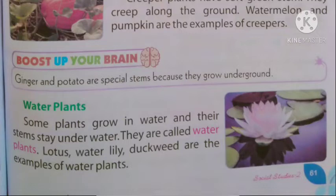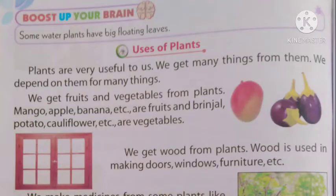कुछ ऐसे भी plants होते हैं जो पानी में रहते हैं। Water plants - some plants grow in water and their stems stay under water, they are called water plants. कुछ plants जो होते हैं वो पानी में उगते हैं और उनके तने पानी में रहते हैं। Lotus, water lily, duckweed are examples of water plants. Some water plants have big floating leaves.